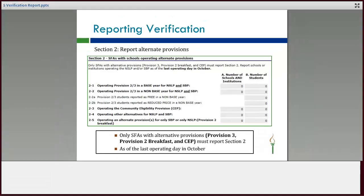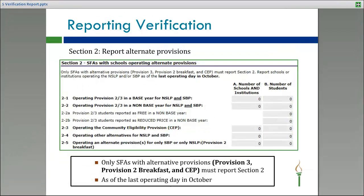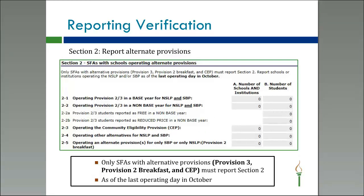In Section 2, you only fill this out if you're operating in an alternative provision, such as Provision 2, Provision 3, or CEP. You'll report the number of schools and the number of students participating in those provisions, as of the last operating day in October.